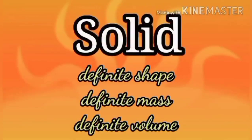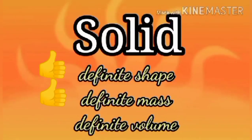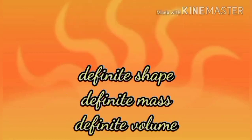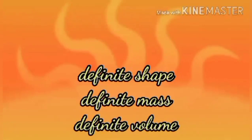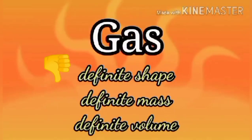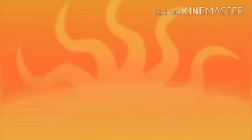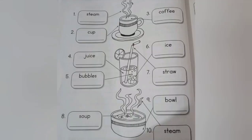A solid has a definite shape, a definite mass, and a definite volume. A liquid has no definite shape, but has a definite mass and a definite volume. A gas has no definite shape, no definite mass, and no definite volume.